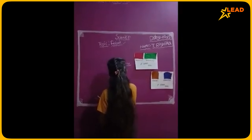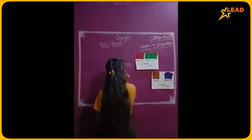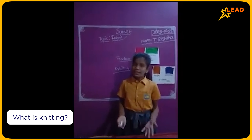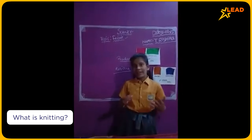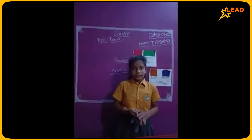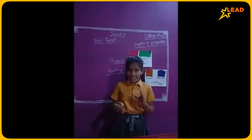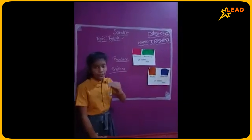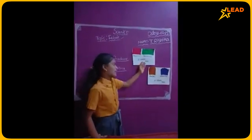Now let's get started with knitting procedure. Knitting is a method by which yarn is manipulated to create a textile or fabric. This is used in our daily life for garments. Knitting is used in making yarn process.